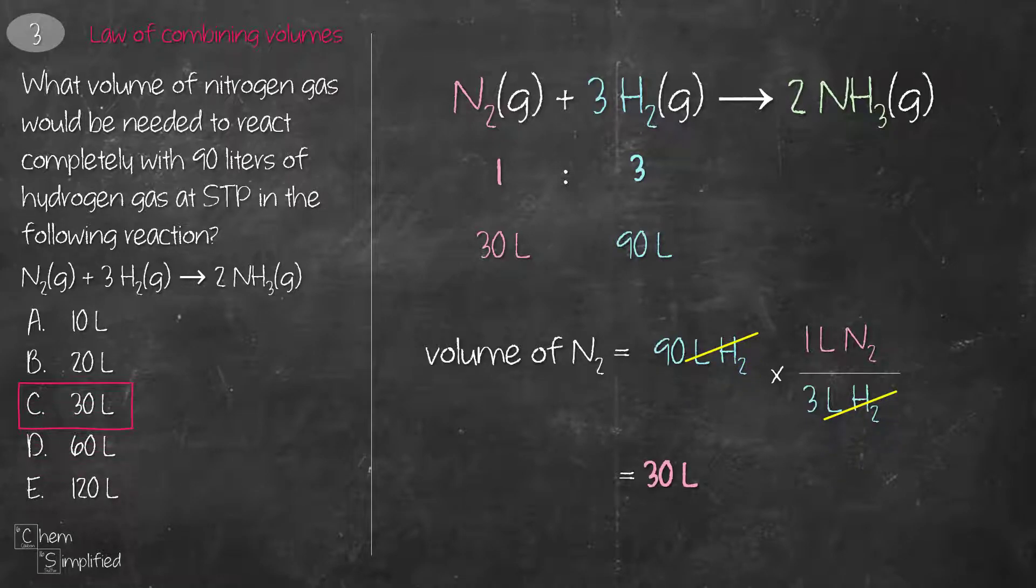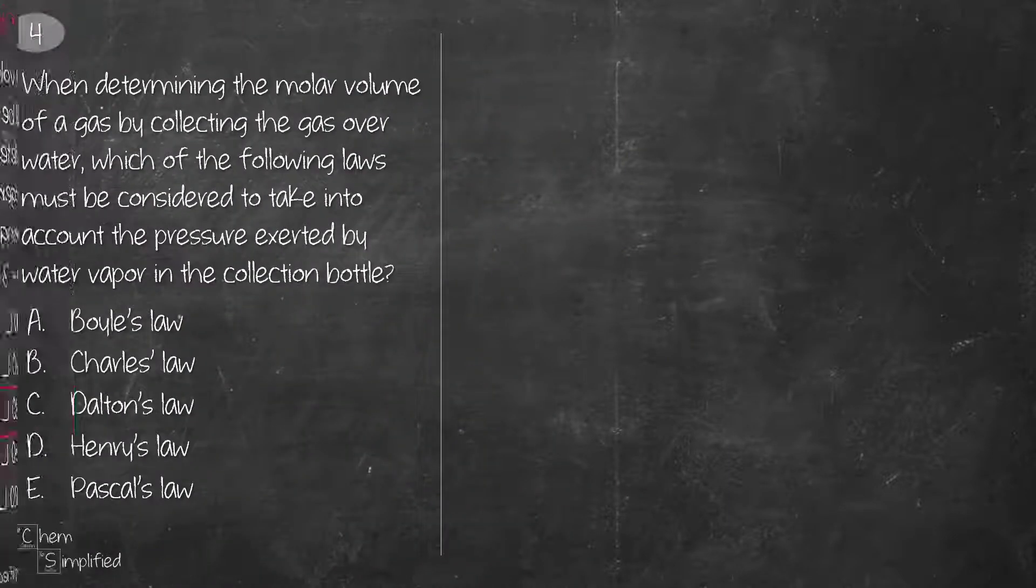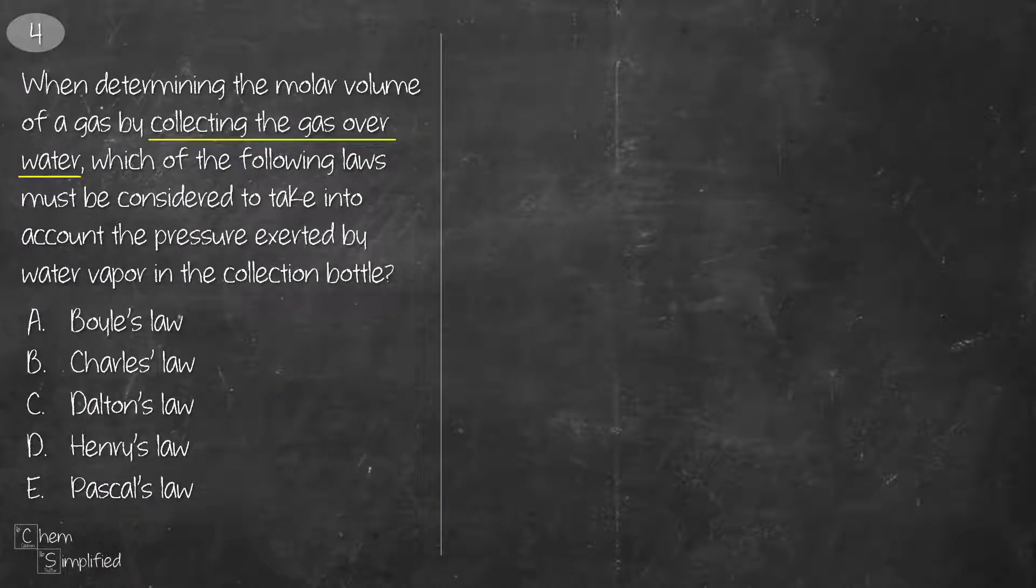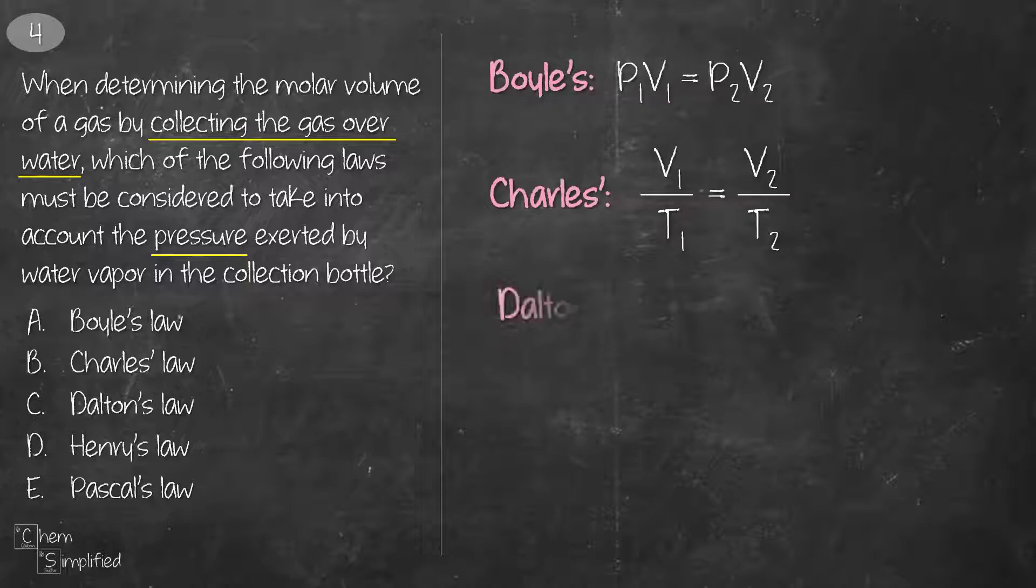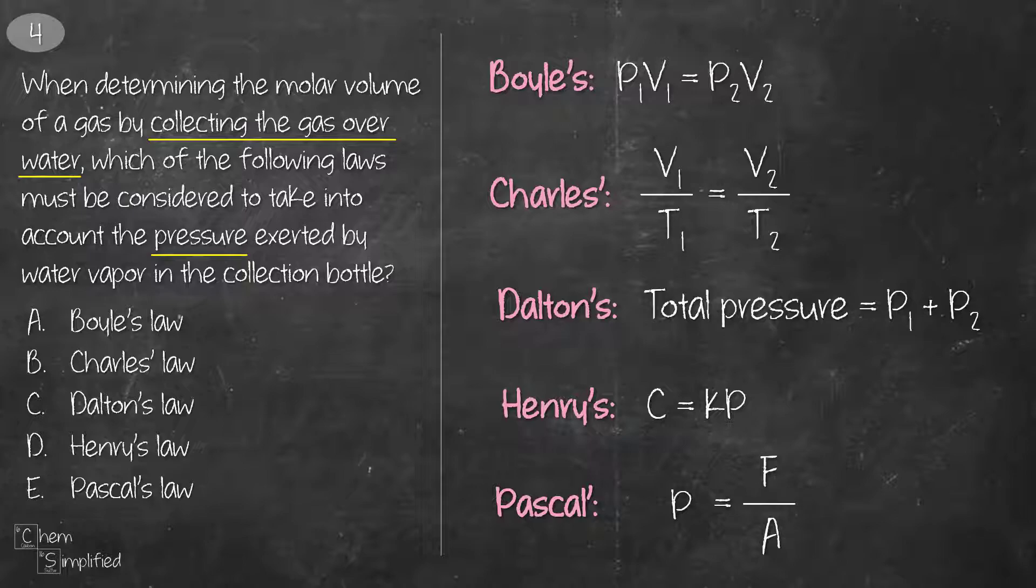This question involves collecting the gas over water and asking which law to be considered when taking into account the pressure exerted by water vapor in the collection bottle. Here are the formulas for each of the gas law. The only formula that involves mixture of different gases is Dalton's law, where the total pressure is the sum of all the partial pressures, which in our case is the partial pressure for water and the gas. Therefore, Dalton's law is the law that we need to consider.